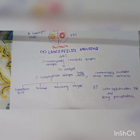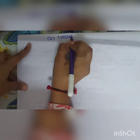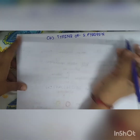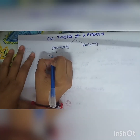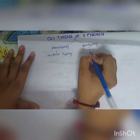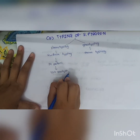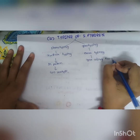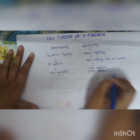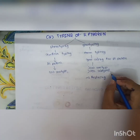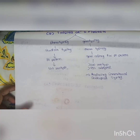The seventh method is typing of S. pyogenes. Typing includes phenotypic and genotypic methods. Phenotypic typing uses Griffith typing, which identifies M protein and yields more than 100 serotypes. Genotypic typing uses emm typing, which identifies the gene coding for M protein and yields more than 200 serotypes and over 750 subspecies. This is why genotyping is almost replacing conventional serological typing.